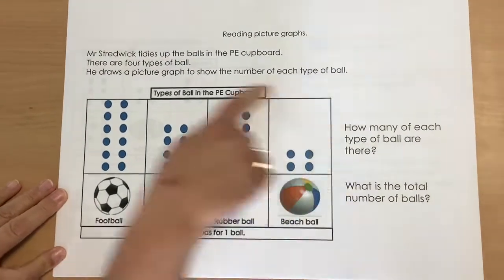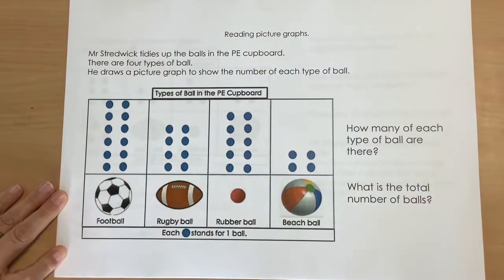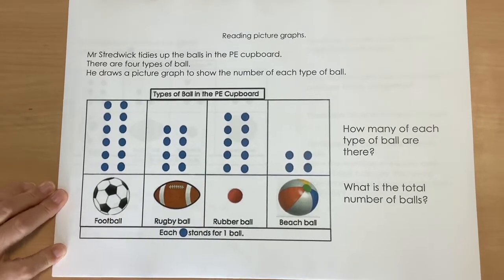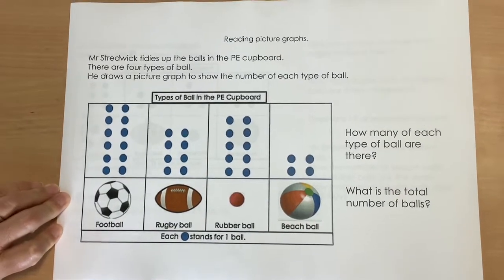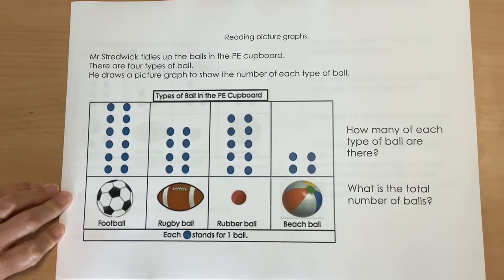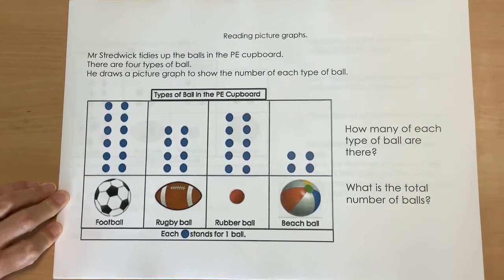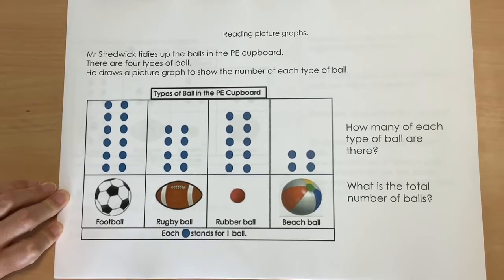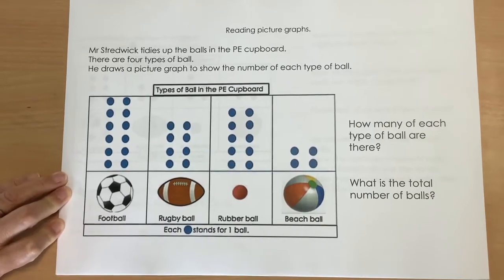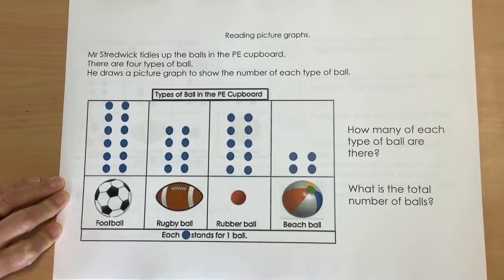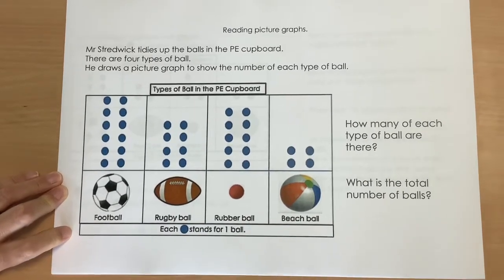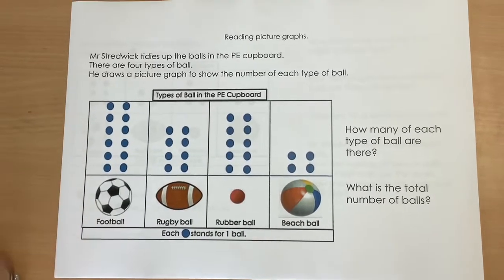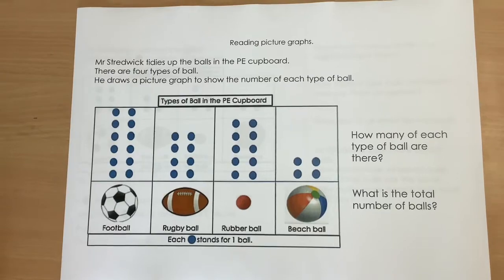So here is a picture graph. It tells the story: Mr Stredwick tidies up the balls in the PE cupboard. There are four types of ball and he has drawn a picture graph to show the number of each type of ball. Pause the video and have a look at the graph and see what information, what data you can draw from the picture graph.